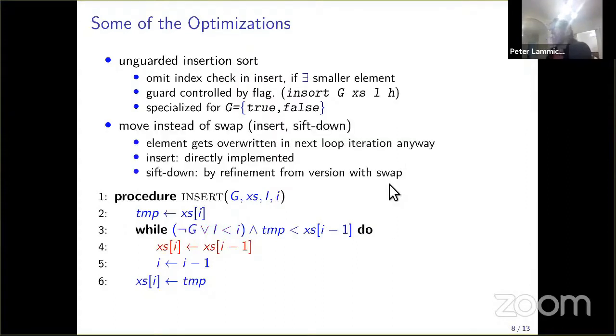Another optimization: usually you represent these algorithms by a swap. You would swap element i with element i minus 1. However, in this loop, one side of the swap will get overwritten in the next iteration anyway. That's one read and one write too much. So we can replace the swap by a move. This also gives a measurable speedup.